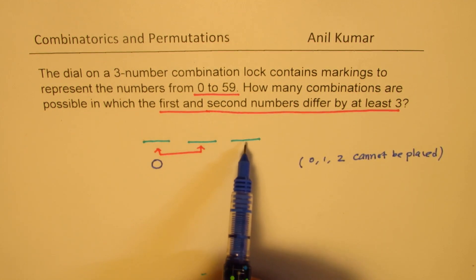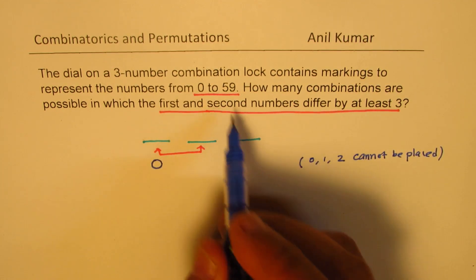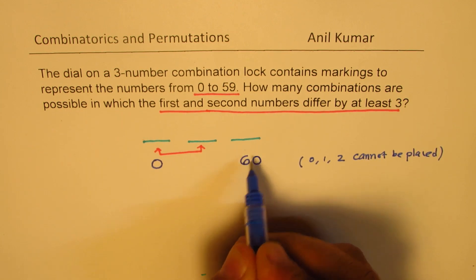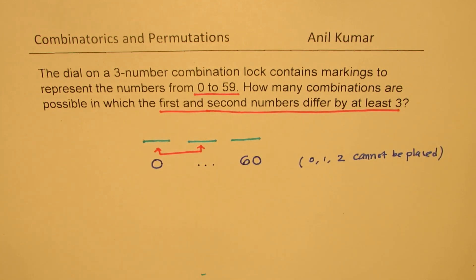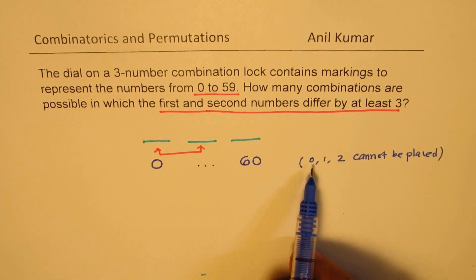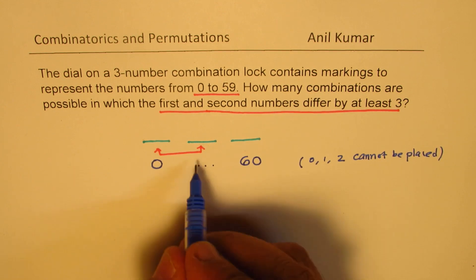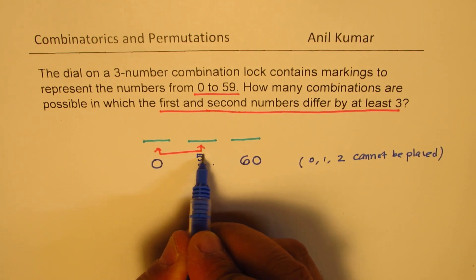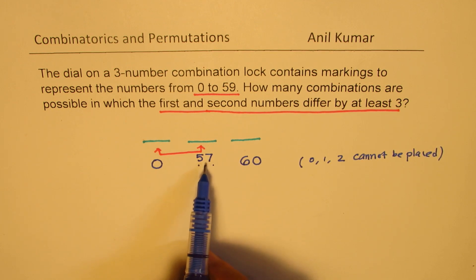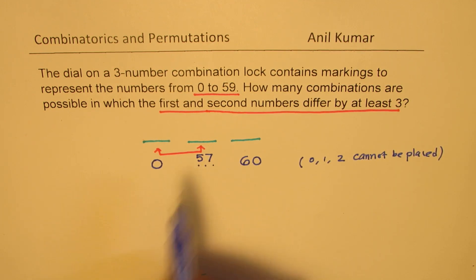Now 0 to 59 means we have total 60 numbers. And remember, the last position has no restriction. So in the last position, we can always place 60. The restriction is only here. Now out of 60 numbers which we have, we cannot place 3, that means we can place 57. We can place any number from 3 to 59, which gives us 57 numbers.